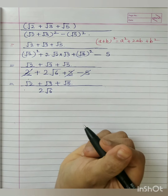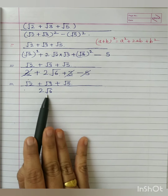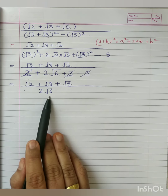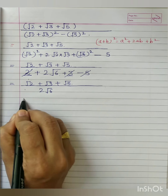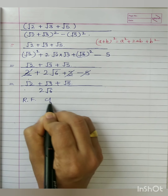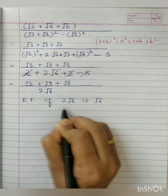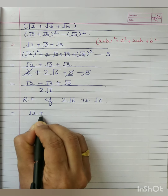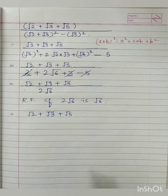Now our question is still to rationalize the denominator, so we need to remove this root 6 also. 2 is a rational number so we don't have to think about that — we only think about root 6. So what is the RF to make root 6 rational? Root 6. The RF of our denominator 2 root 6 will be root 6 only, because these two together will become a rational number. So root 2 plus root 3 plus root 5 will also be multiplied by root 6.